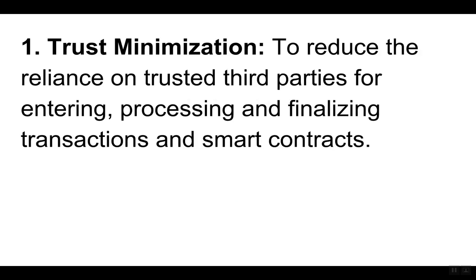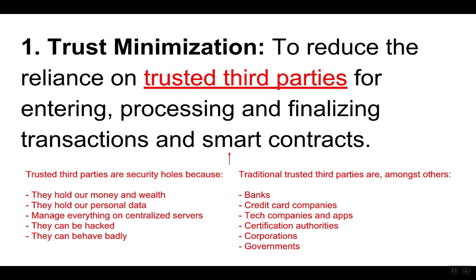One, trust minimization: to reduce the reliance on trusted third parties for entering, processing and finalizing transactions and smart contracts. Trusted third parties are security holes because they hold our money and wealth, they hold our personal data, manage everything on centralized servers, they can be hacked and they can behave badly.